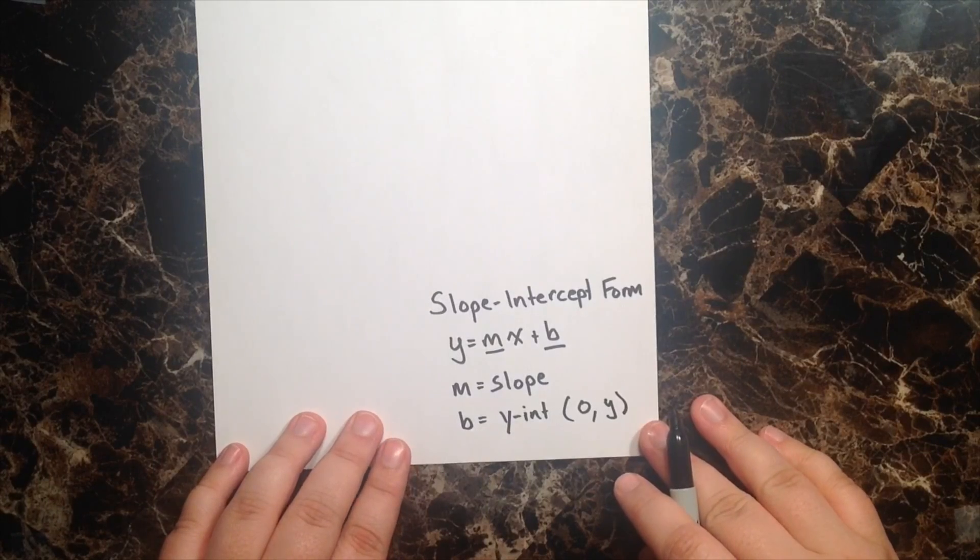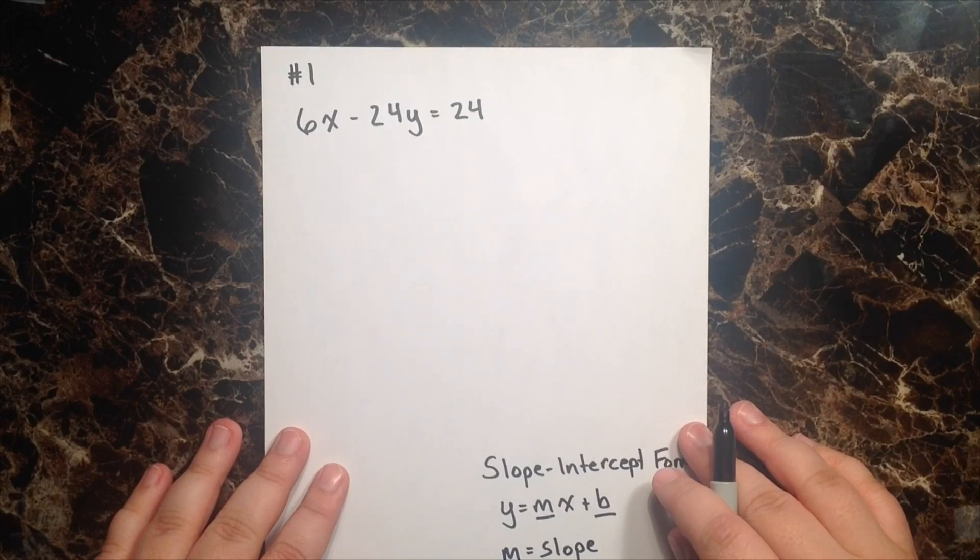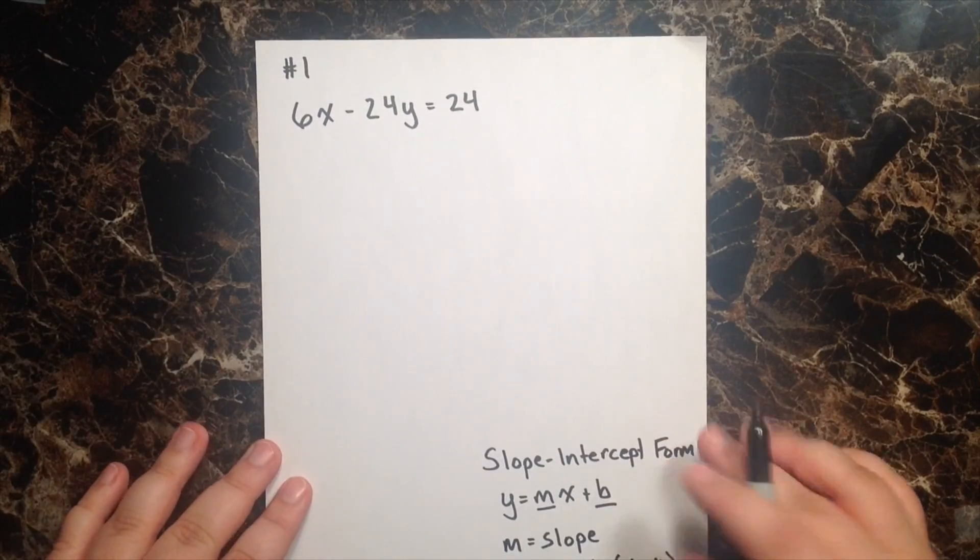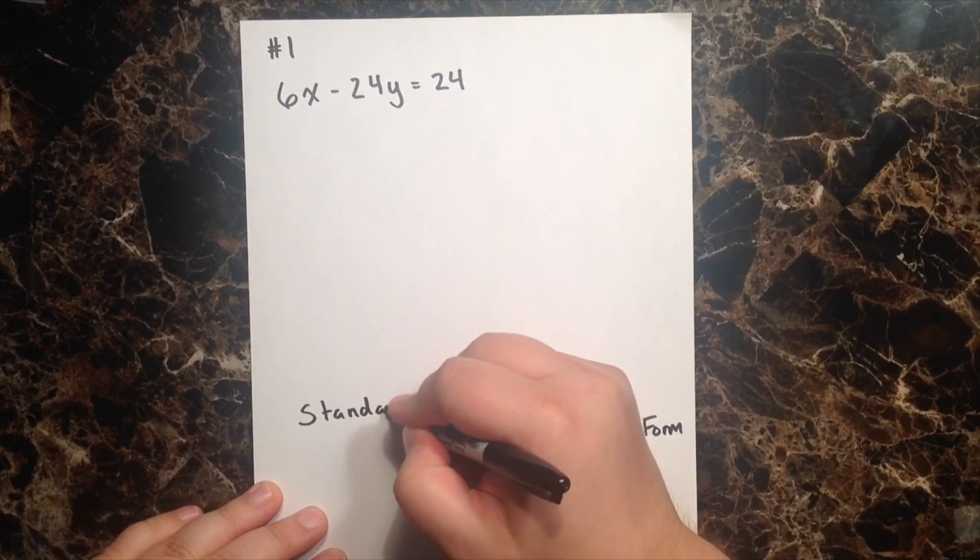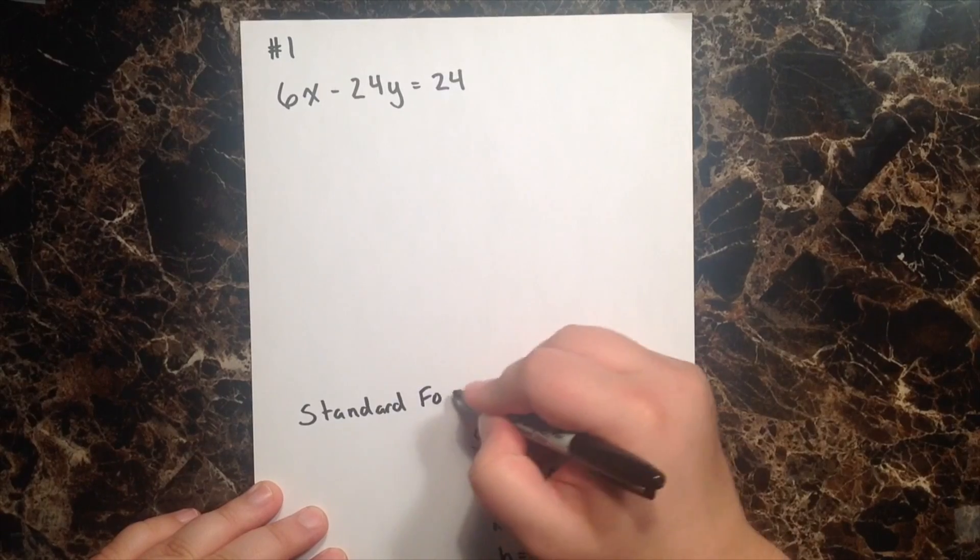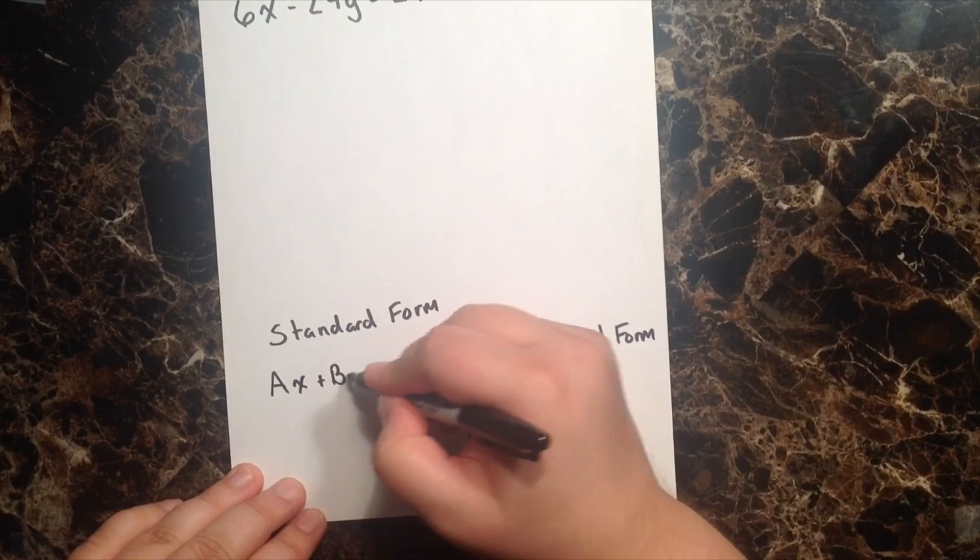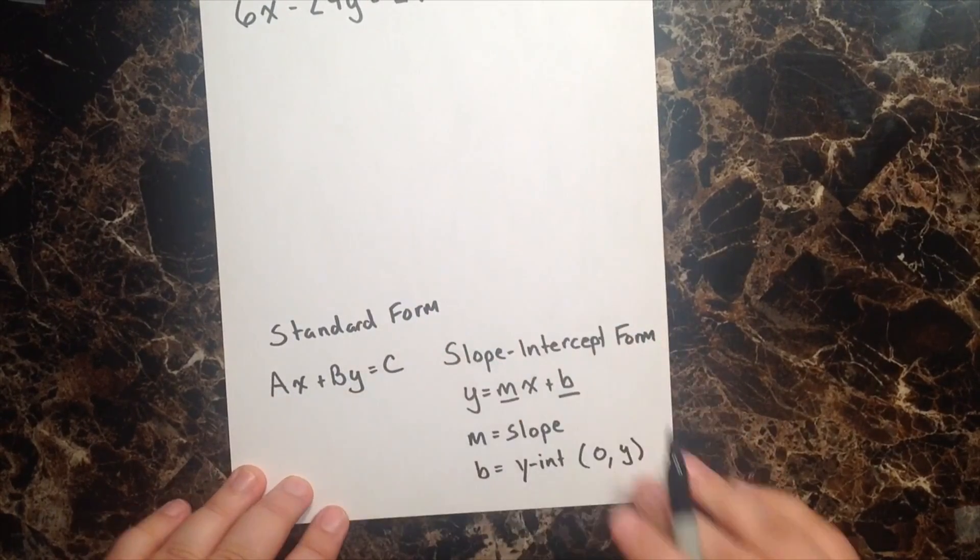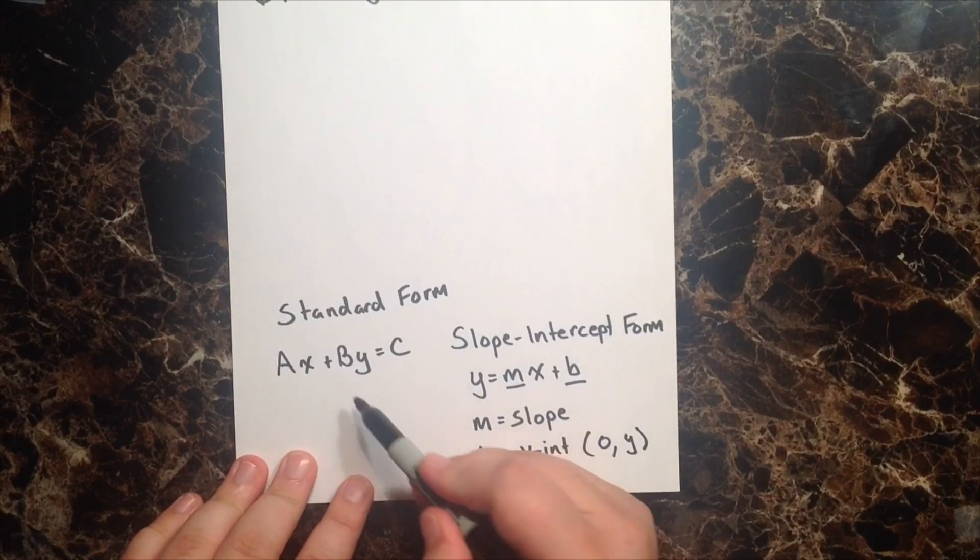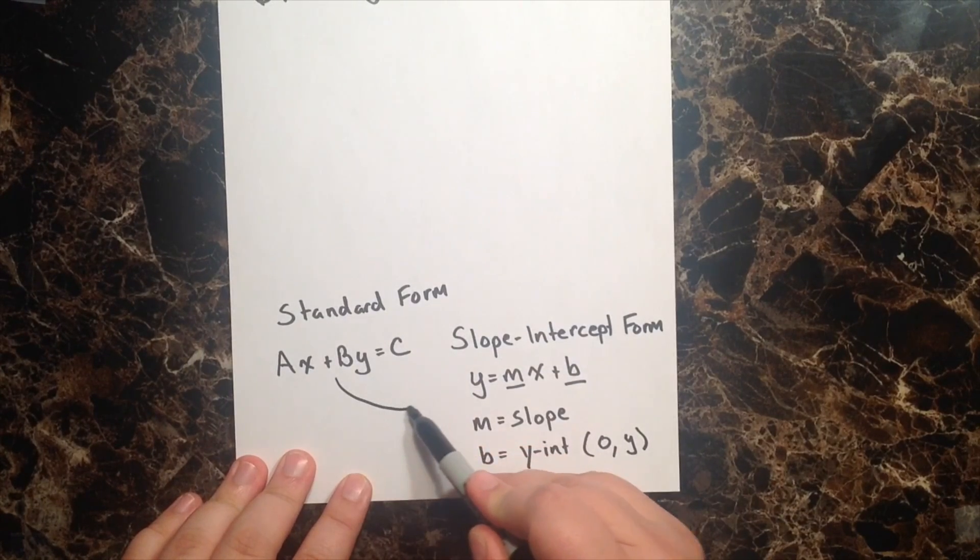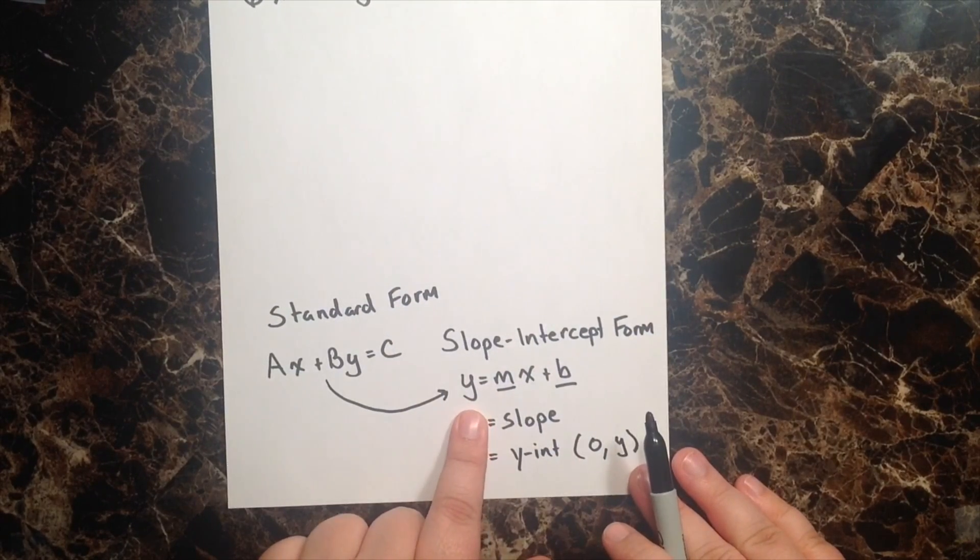And b represents our y-intercept, where the y-intercept is some point. So taking a look at the given equation, this is actually in another special form called standard form. And standard form is simply Ax plus By equals C. And it's important to know that because we know that we can easily go from standard form to slope-intercept form by simply isolating or solving for y.